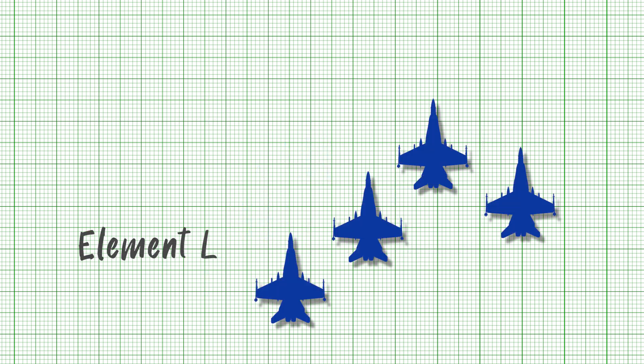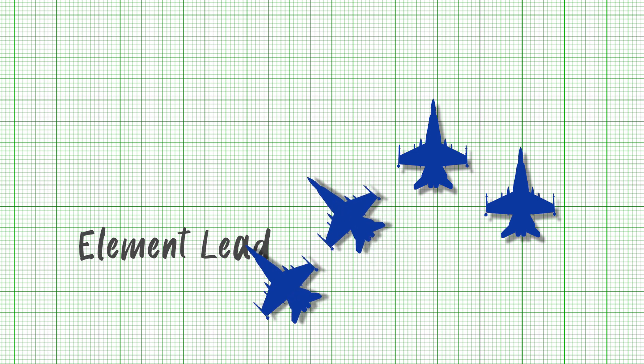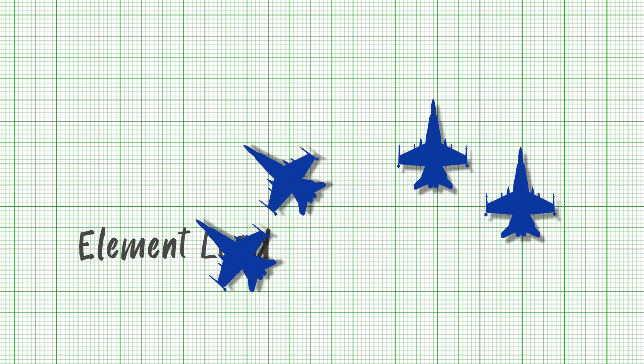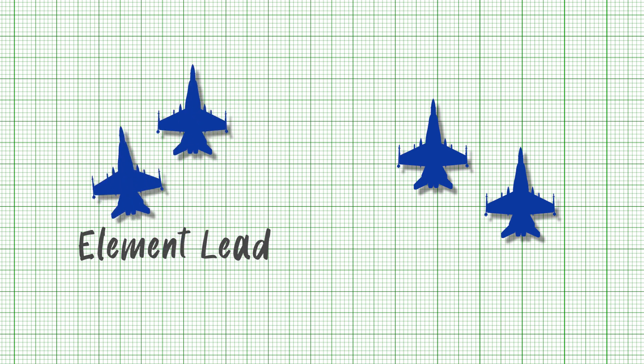Element lead. In an element, one aircraft is designated to be the leader for that element. This position is still subordinate to the flight lead but may be needed to act in a lead capacity for the element — for example, if the elements of a flight need to split.